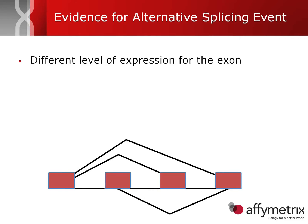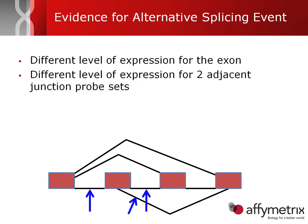What you can expect to see is something like this. You can look at the differential expression of the exon itself, because if the exon goes in or out, that exon expression level will change. In addition, you can look at the different levels of expression for the adjacent probesets, or adjacent adapters. In this case, these connect the exon to the surrounding exons, and at least two of those should also move in the same direction as the exon itself.